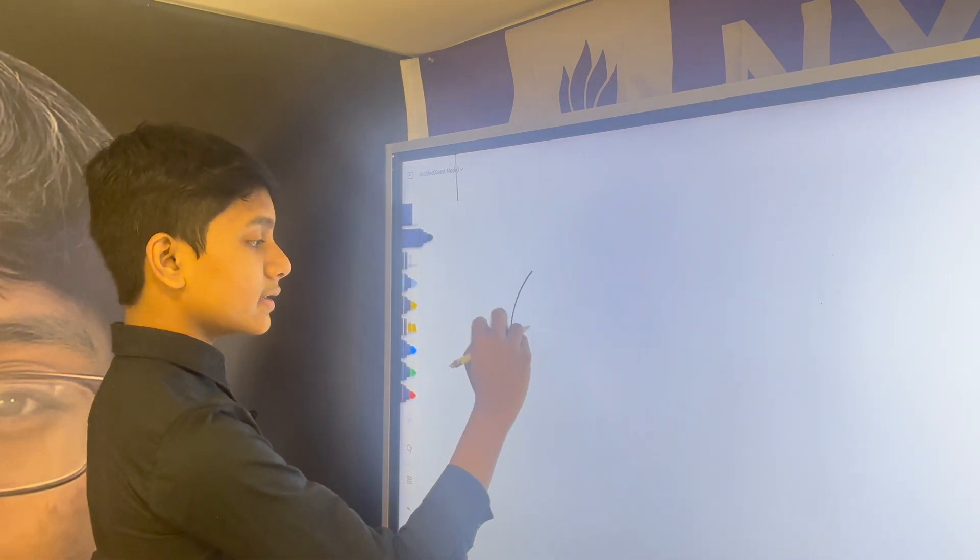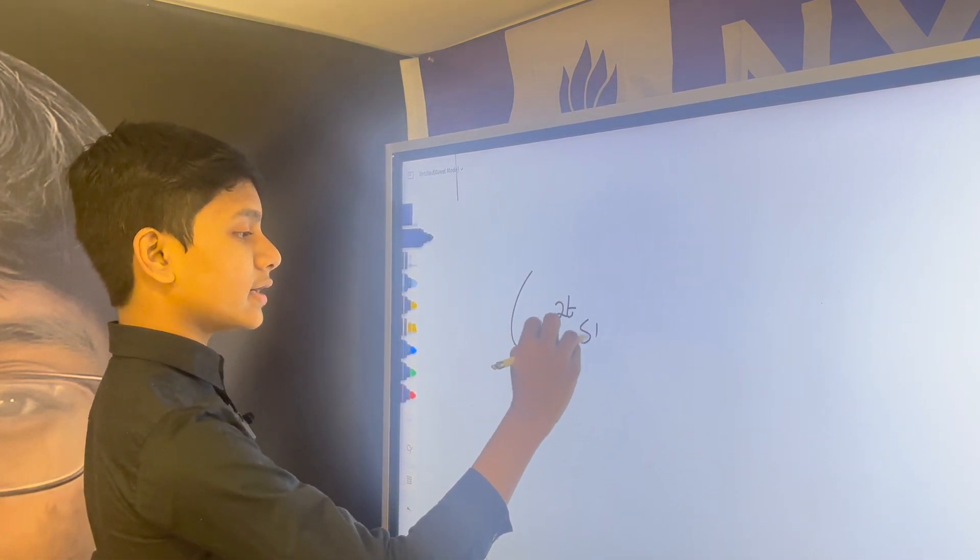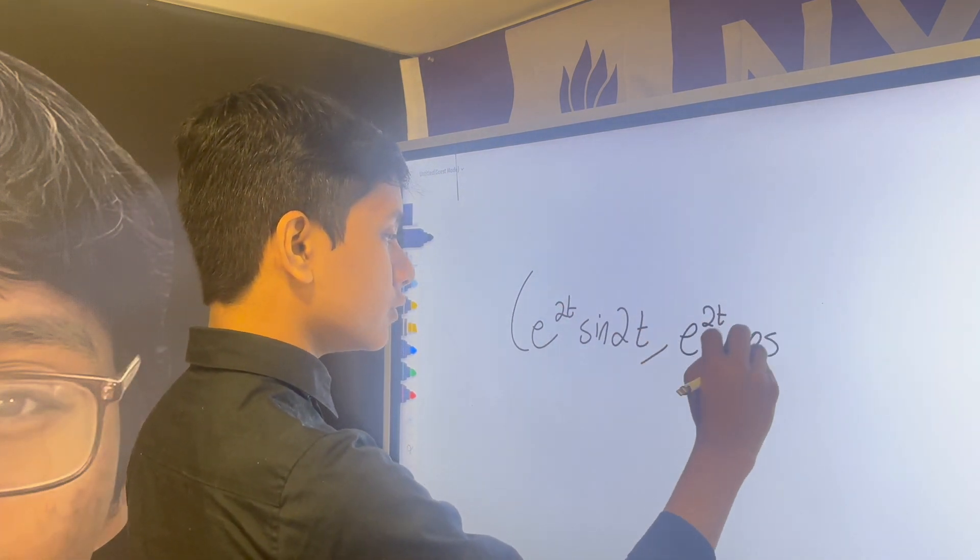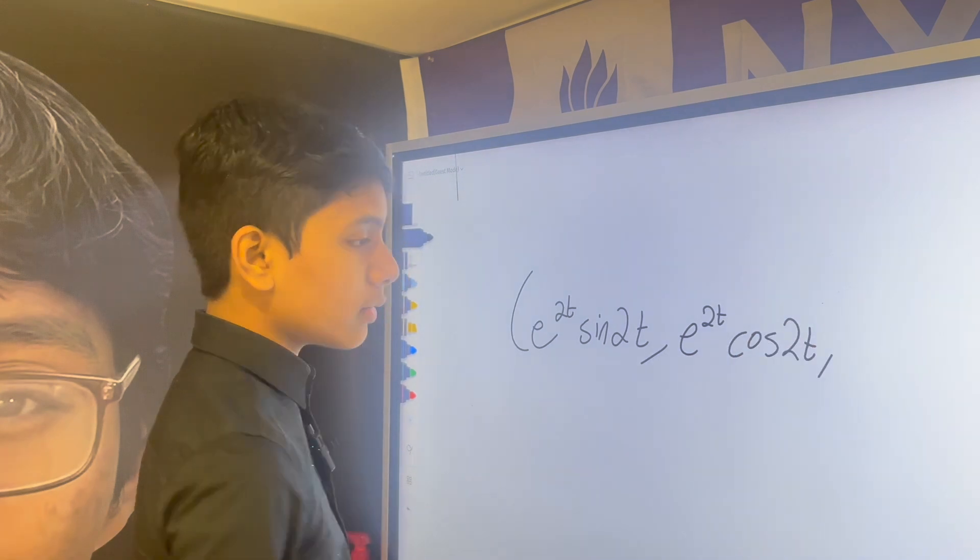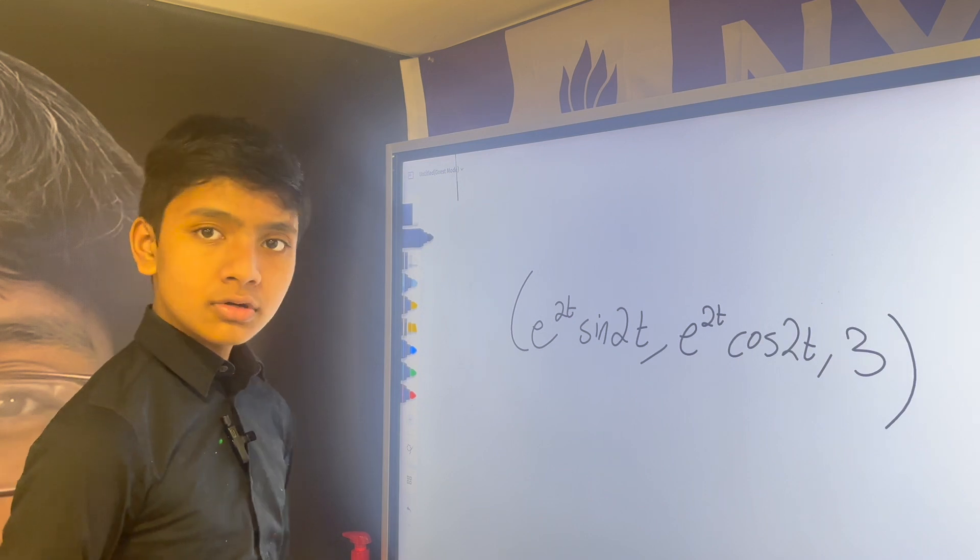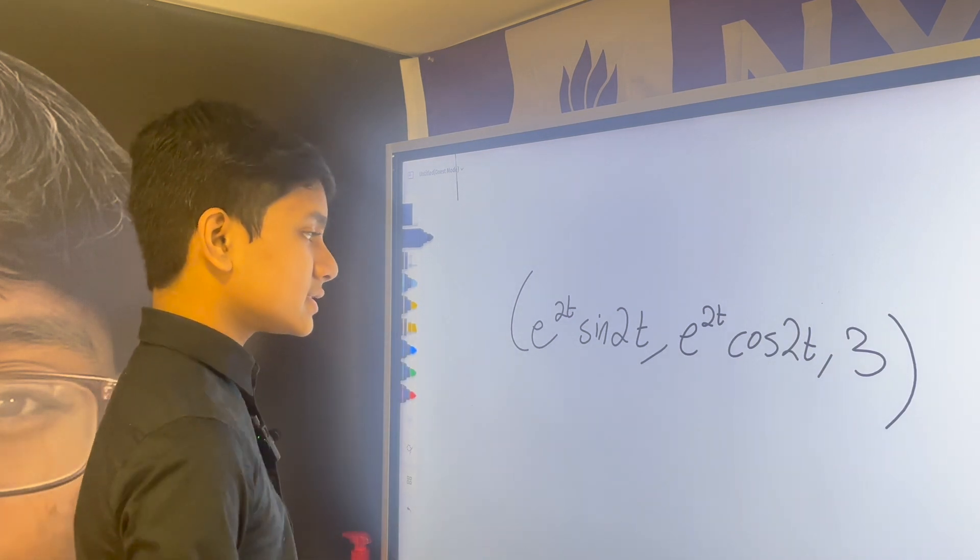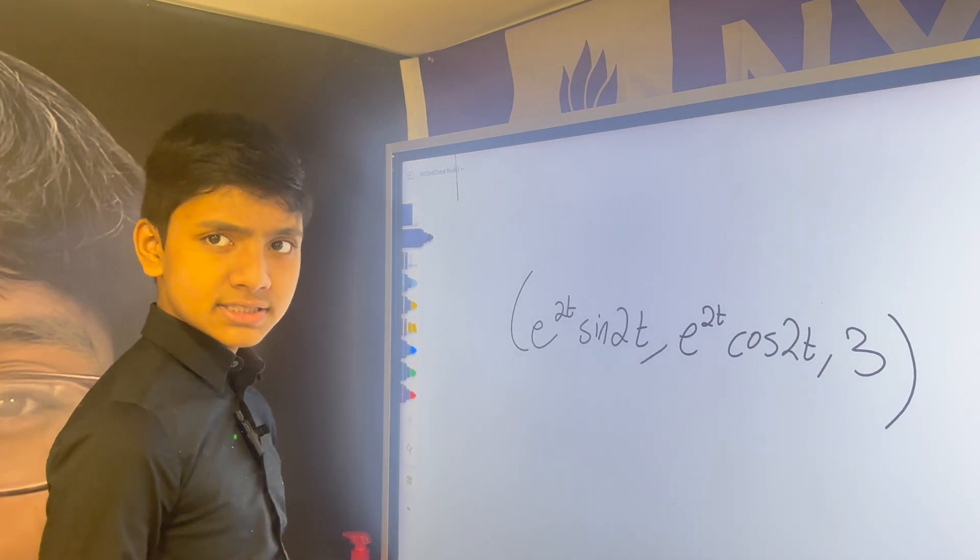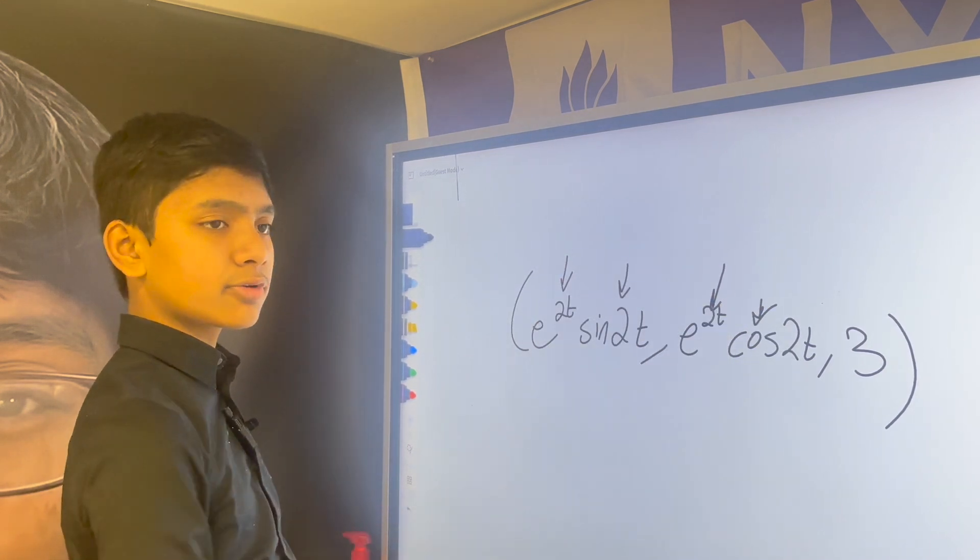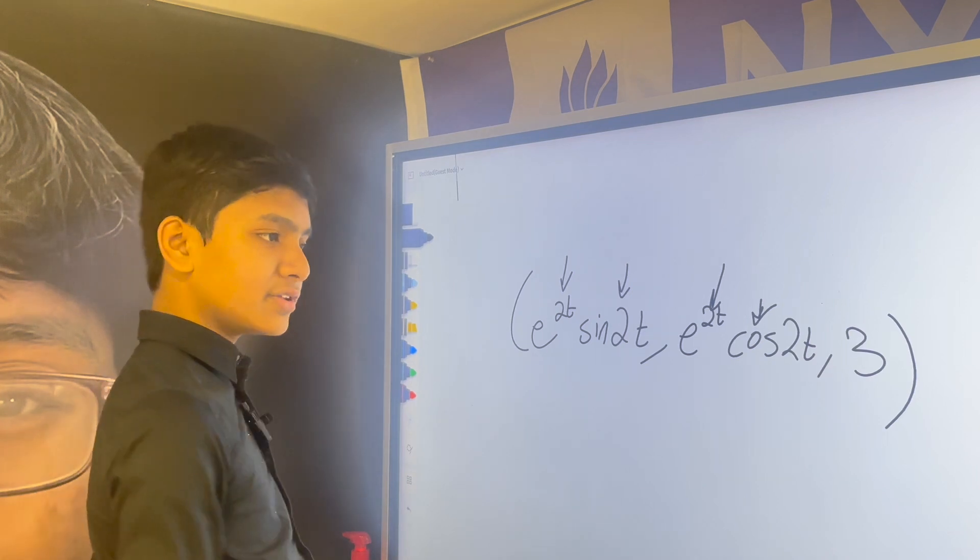Like, let's say, e to the 2t sine 2t comma e to the 2t cosine 2t comma 3. So, what do we do with this? Now, you might already recognize this still should be pretty easy given e and sine and cosine are still pretty much brothers. So, what do we have here?